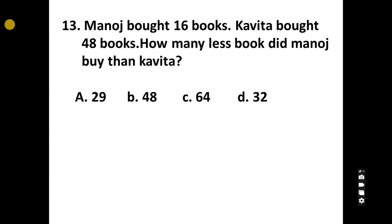13. Manoj read 16 books. Kavita read 48 books. How many less books did Manoj read than Kavita? A, 29, B, 48, C, 64, D, 32. Correct answer is Option D, 32.